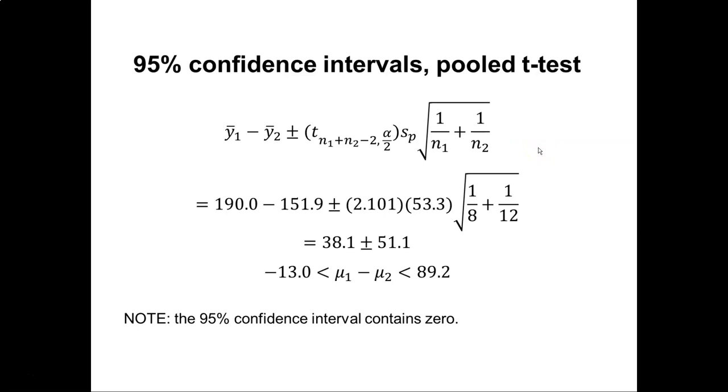So when we do that with the fertilizer data, we can plug in the numbers here. Note that from our t-table, we'll find a t-statistic of 2.101. When we pool the standard deviation, we get 53.3. And then we multiply by this term under the square root sign that includes the number of observations. And so here we get a value 38.1 plus or minus 51.1.